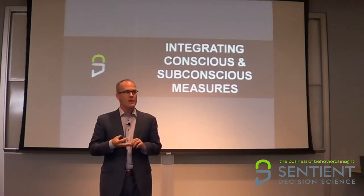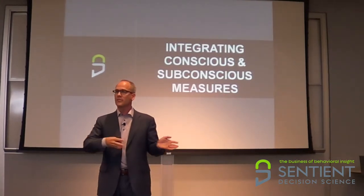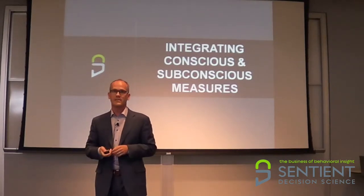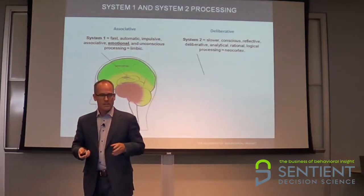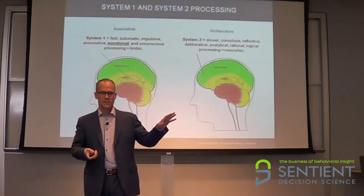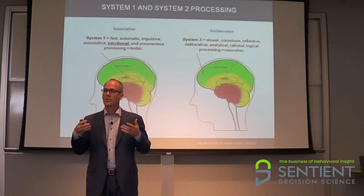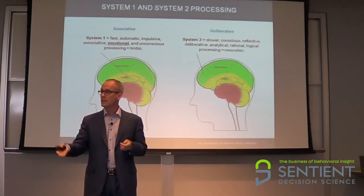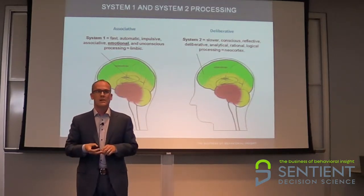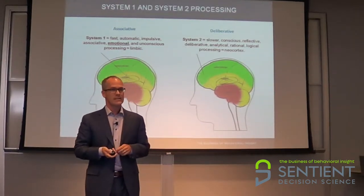If we're tapping System 1 in that way, how do we tap System 2? We need to make sure we're not throwing out our best methods that we've developed over the last 30 years. System 1, as we've talked about, is associative. System 2 is deliberative. When we do surveys, we're asking people to deliberate and give me an answer. But that's not the only way for us to get at deliberative processing.